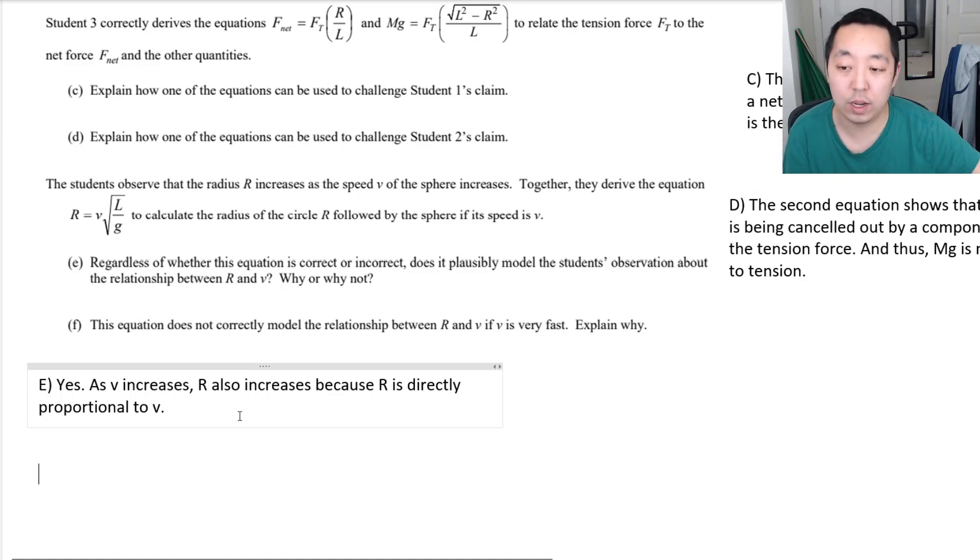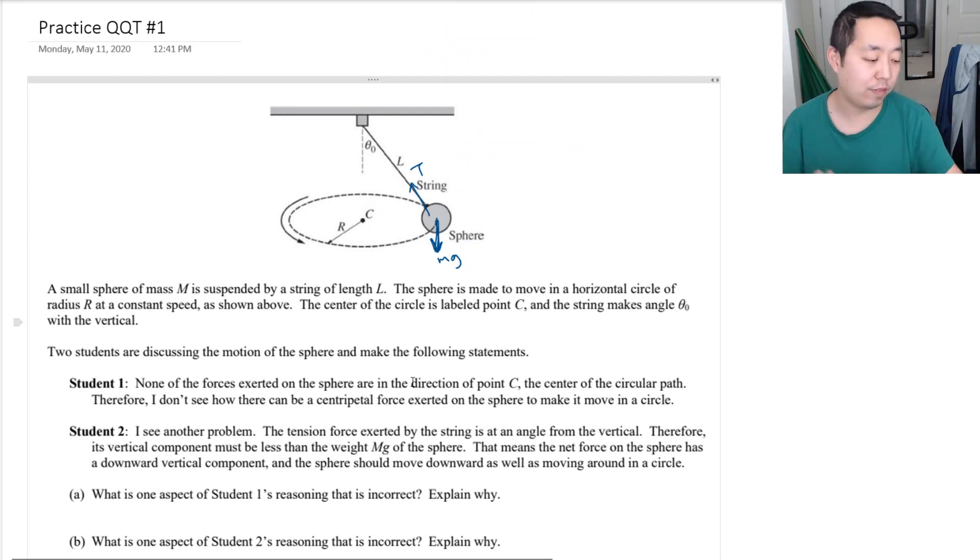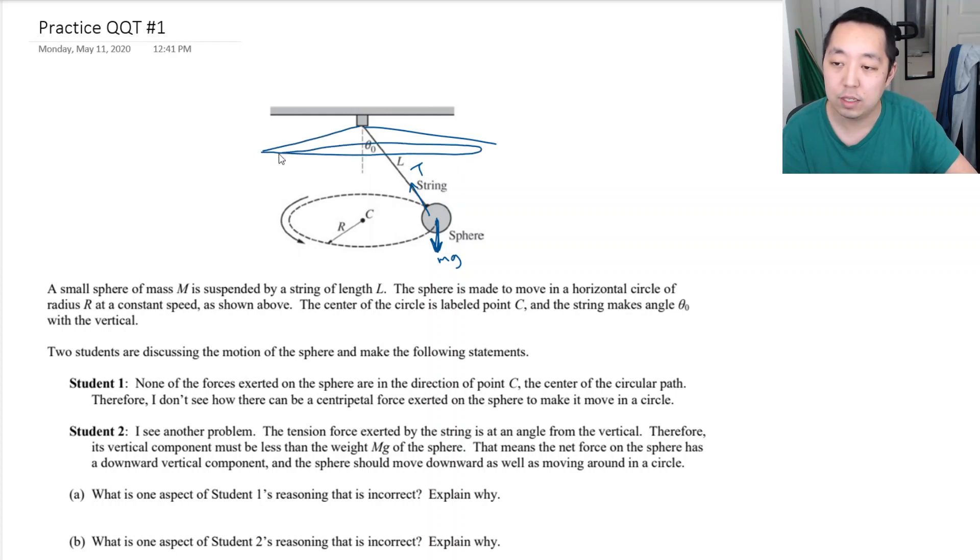This equation does not correctly model the relationship between R and V if V is very fast. It explains why. What would happen if it moved really fast? If it moved really fast, you would expect the radius to increase. But, you would expect it to move more horizontal like this. This would be the path. If it were moving really fast, like if I swing something really fast, it almost looks like it's horizontal. That means R should cap out at L, the length of the string. Like, R should not be more than the length of the string, assuming that the tension doesn't break. Assuming we're not breaking the string, which would then obviously throw off all the equations and all the modeling. And it wouldn't move in a circle anymore.